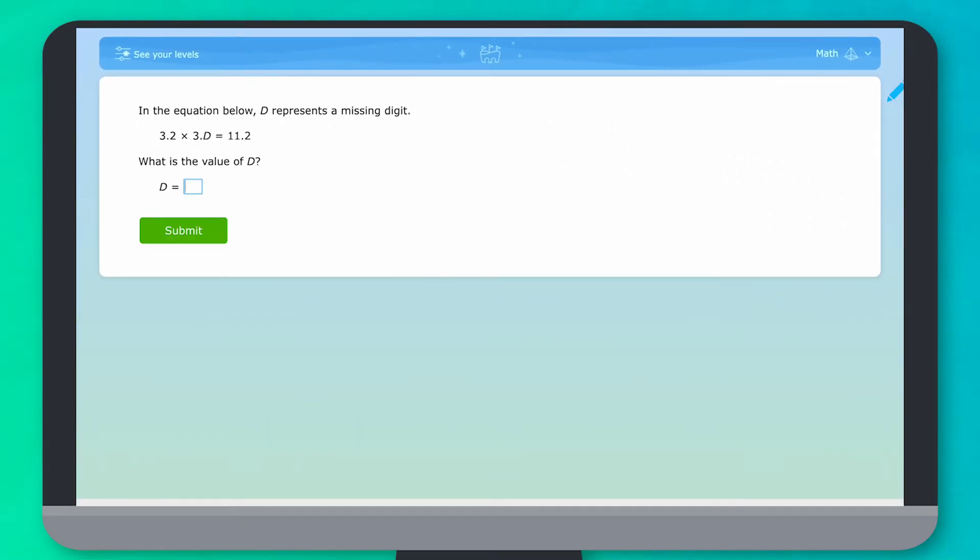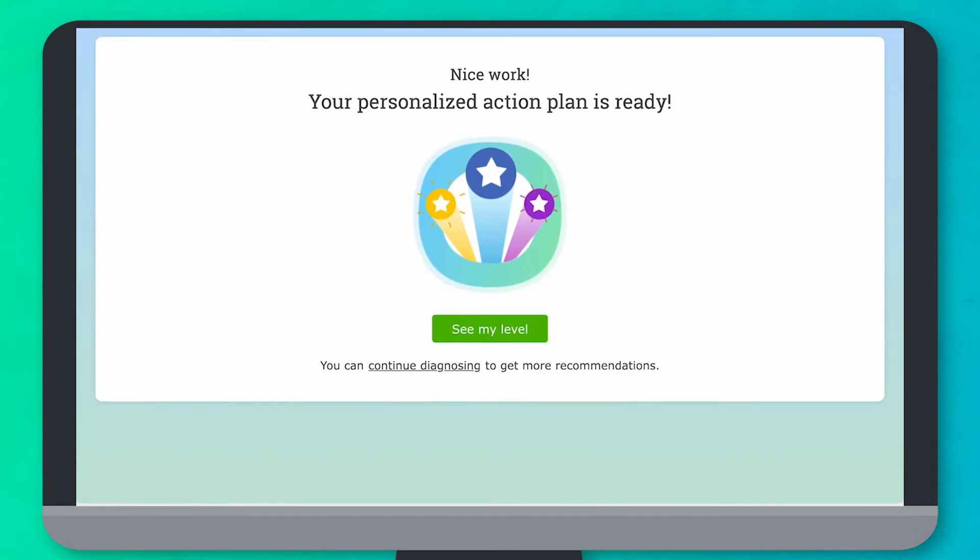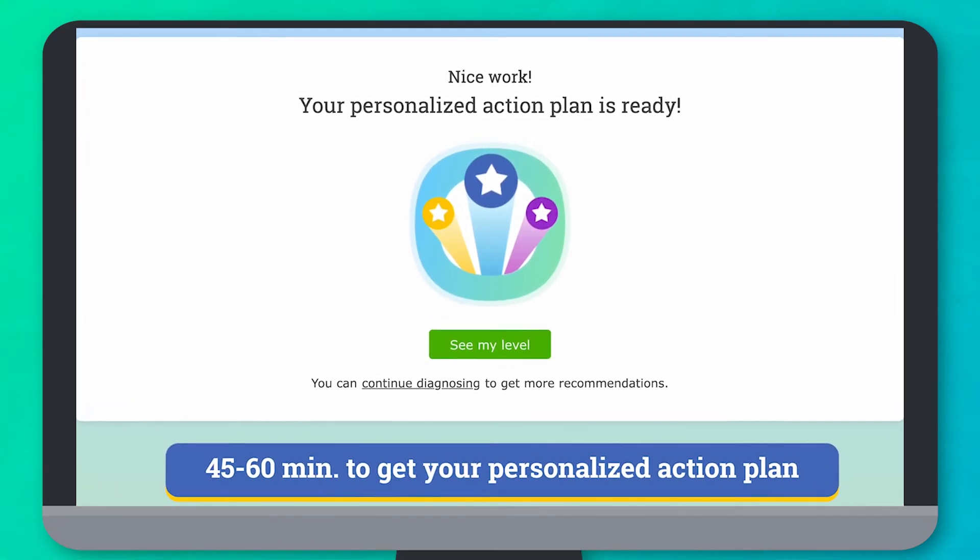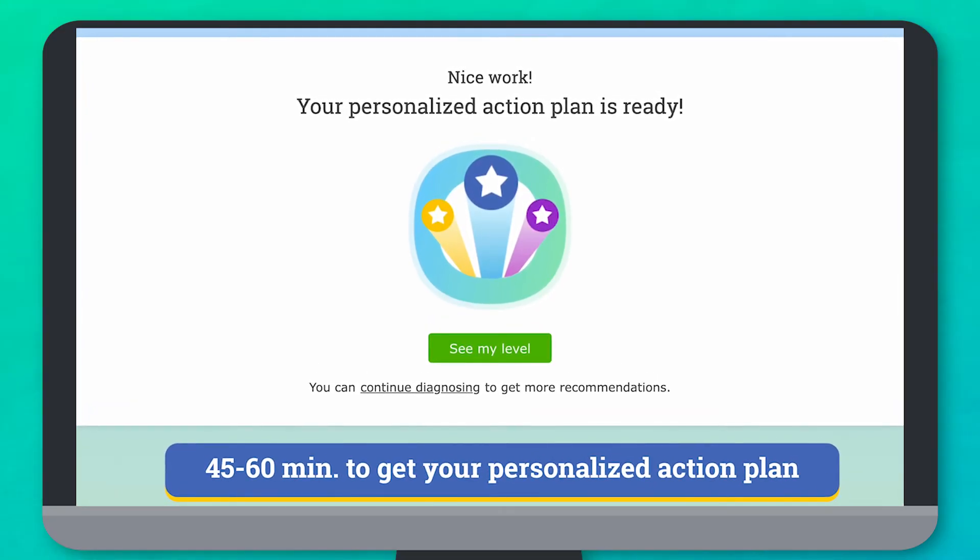Keep going until you see a message that says your personalized plan is ready. This will usually take about 45 minutes, but no more than an hour.